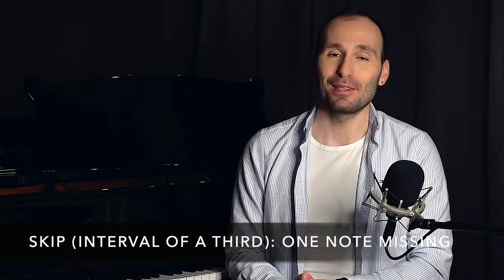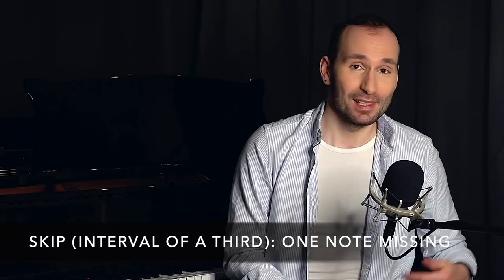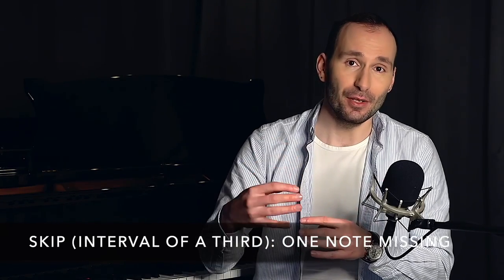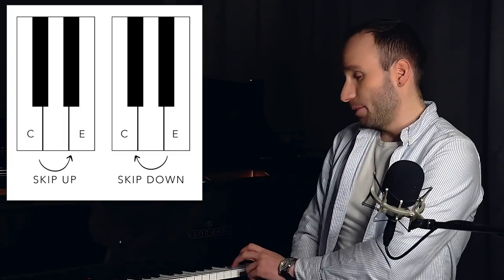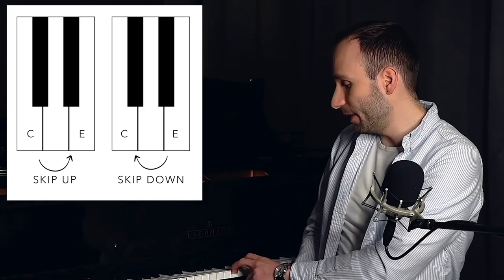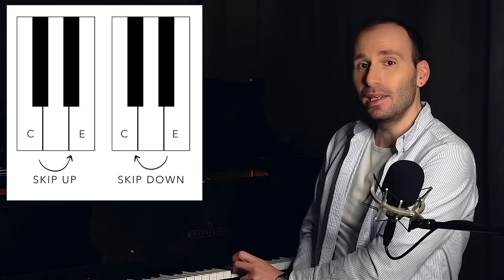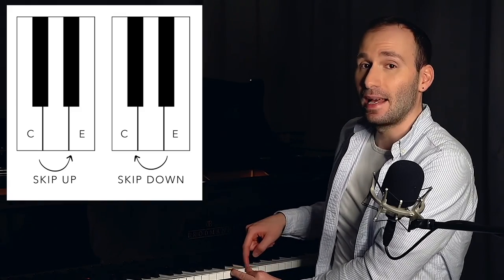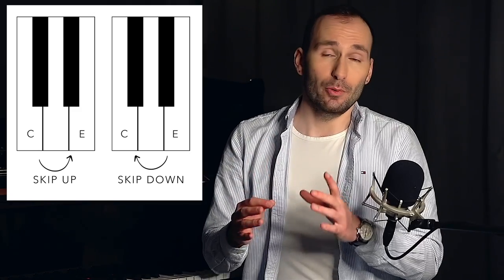The second building block of sight reading or reading music is going to be the skip. Now, the skip is much easier to understand once you know what a step is. The step is the adjacent note, but a skip is going to be, as the name says, skipping one note. So if I'm at middle C and I want to go one skip up, I have to skip D and go to E. So one note is missing between the E and the C. That's why it's called a skip.